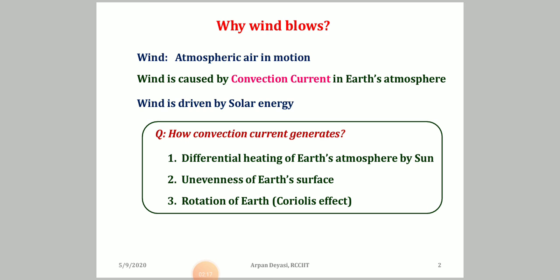The unevenness of the earth's surface and the rotation of the earth — which produces the Coriolis force, as studied in classical mechanics — together make the convection currents in the earth's atmosphere. When solar energy is absorbed, heating takes place, and that basically causes the flow of wind.